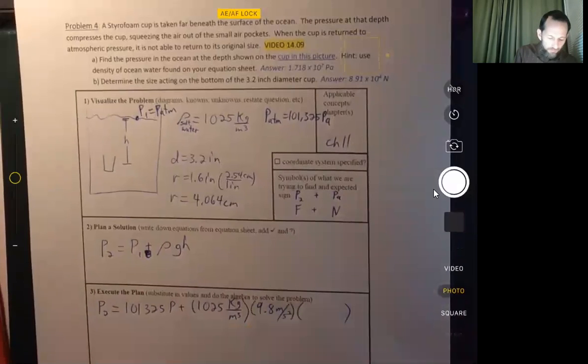Times 9.8 meters per second squared times that depth that you looked up. Okay. And that's in the picture. And I just really want you to see that picture. That's why I'm not putting it there.